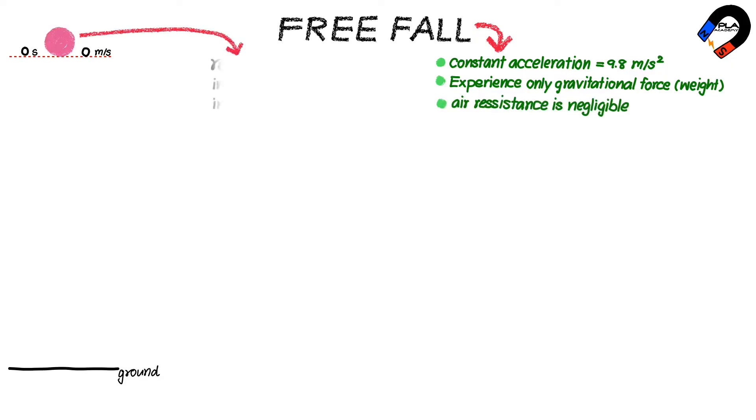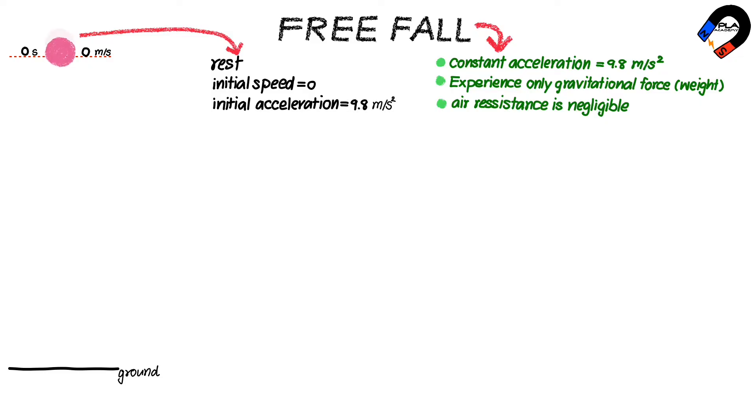Free fall is the motion due to constant acceleration of 9.8 meters per second squared, experienced under the gravitational force of the Earth where air resistance is negligible. When a ball is dropped from rest above the ground, the initial speed is zero and the initial acceleration is 9.8 meters per second squared.